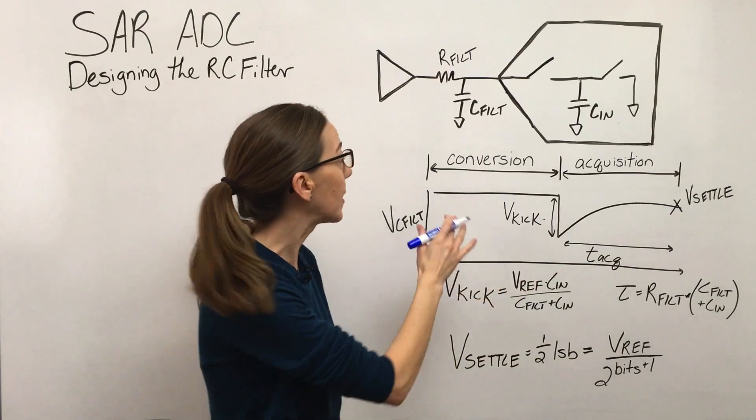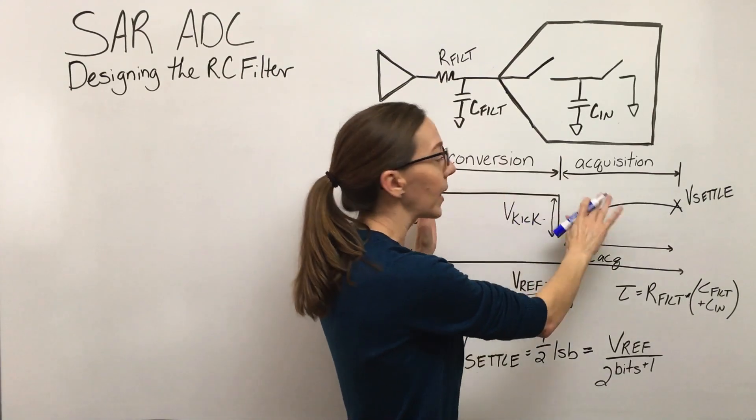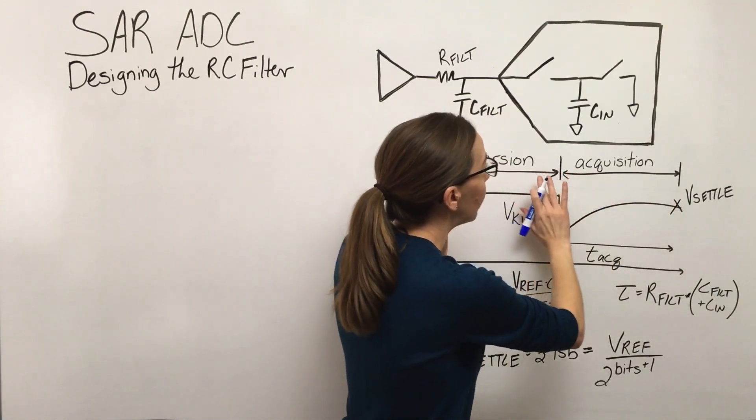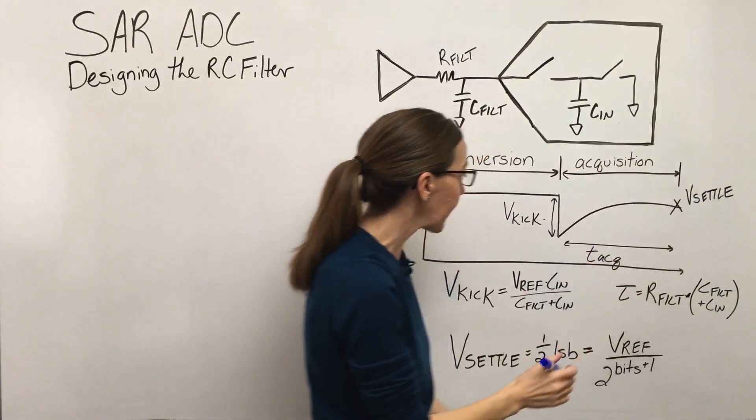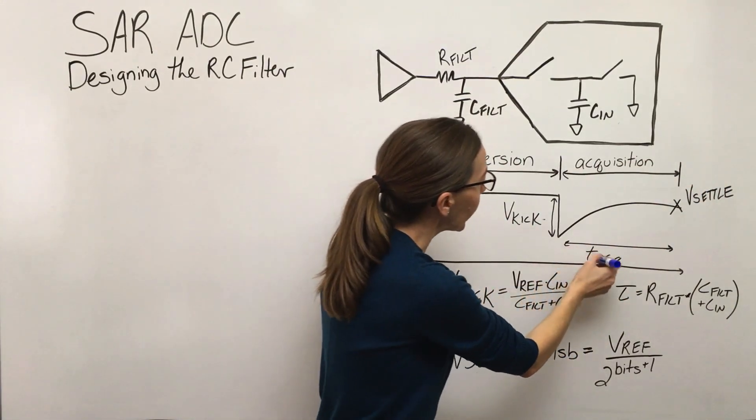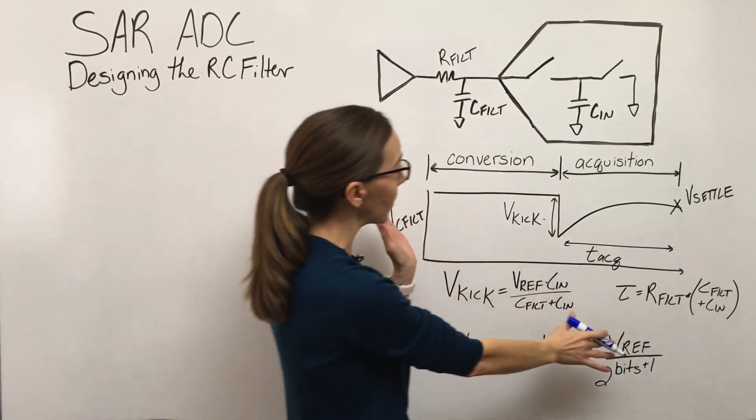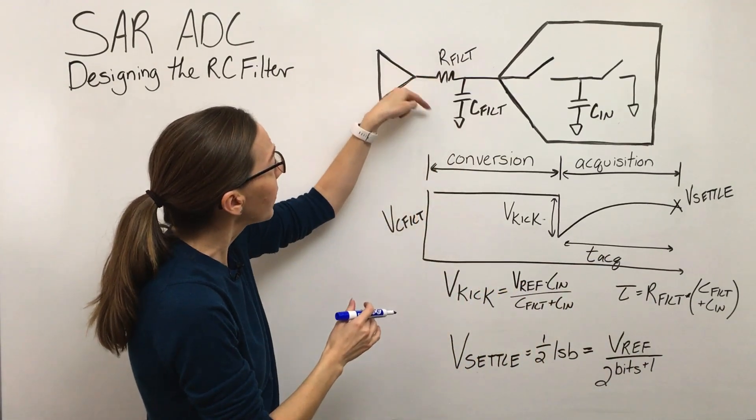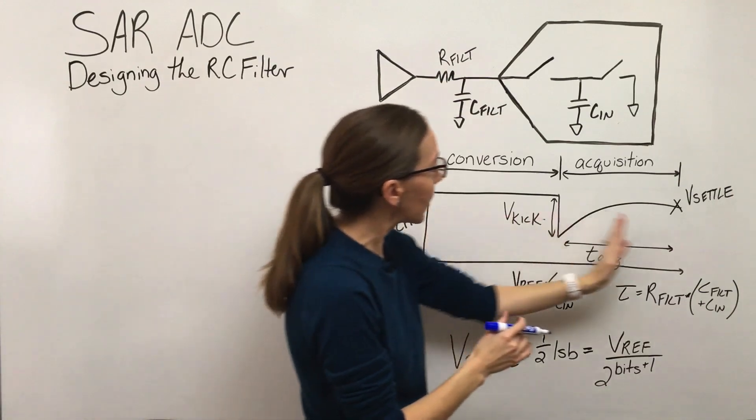And so the acquisition time is the overall sample rate minus the conversion time. And the reason this is important is that if you took an ADC but you didn't sample it at the max sample rate, maybe you slowed the sample rate down, that's actually giving you a longer acquisition time. So knowing the acquisition time is important. This is the basis for our curve and how we can determine if we select an R and a C for the circuit, if it's going to settle.